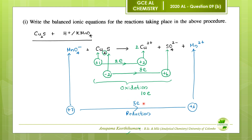To balance electrons, multiply the 5-electron reduction by 2, giving 10, and add a coefficient of 2 to both permanganate and Mn²⁺. Then balance oxygen atoms by adding water molecules: 8 oxygen atoms on the left and 4 on the right, so add 4 water molecules to the right. Finally, balance hydrogen by adding 8 H⁺ ions to the left. This gives the balanced ionic equation for Cu₂S reacting with KMnO₄ in acidic medium.